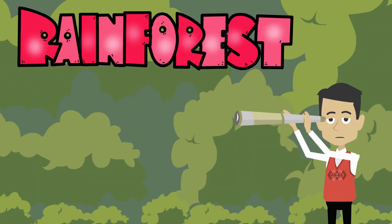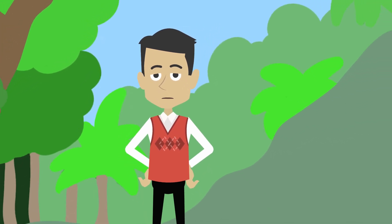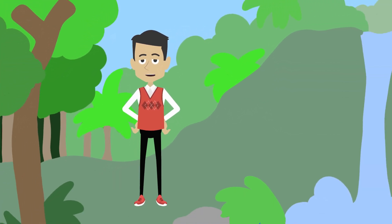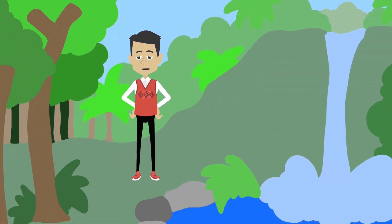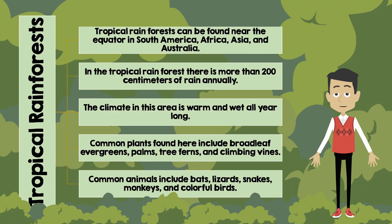Common plants found here include broad-leaf evergreens, palms, tree ferns, and climbing vines. Common animals include bats, lizards, snakes, monkeys, and colorful birds.